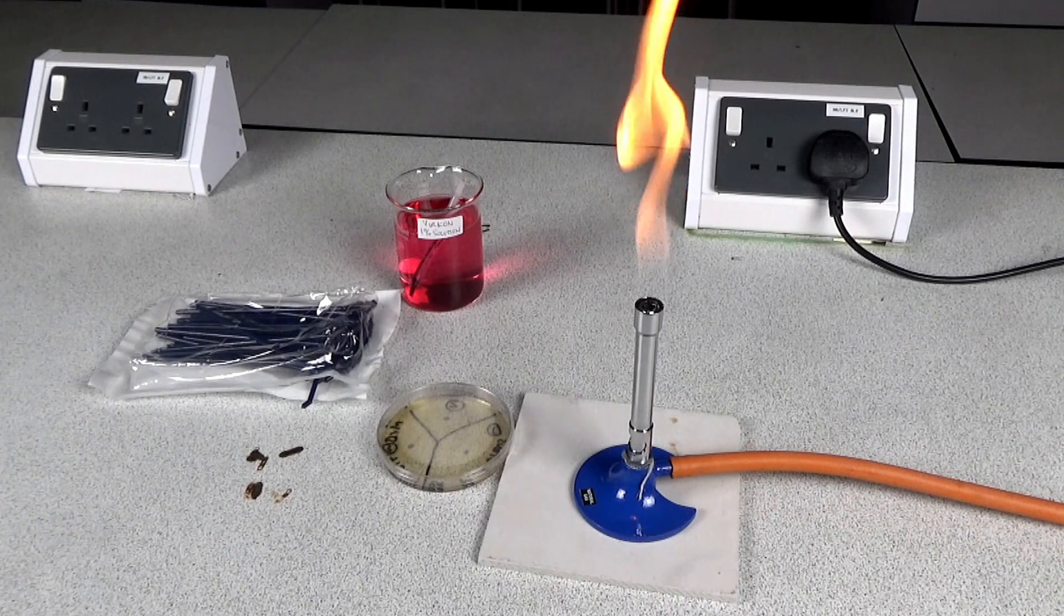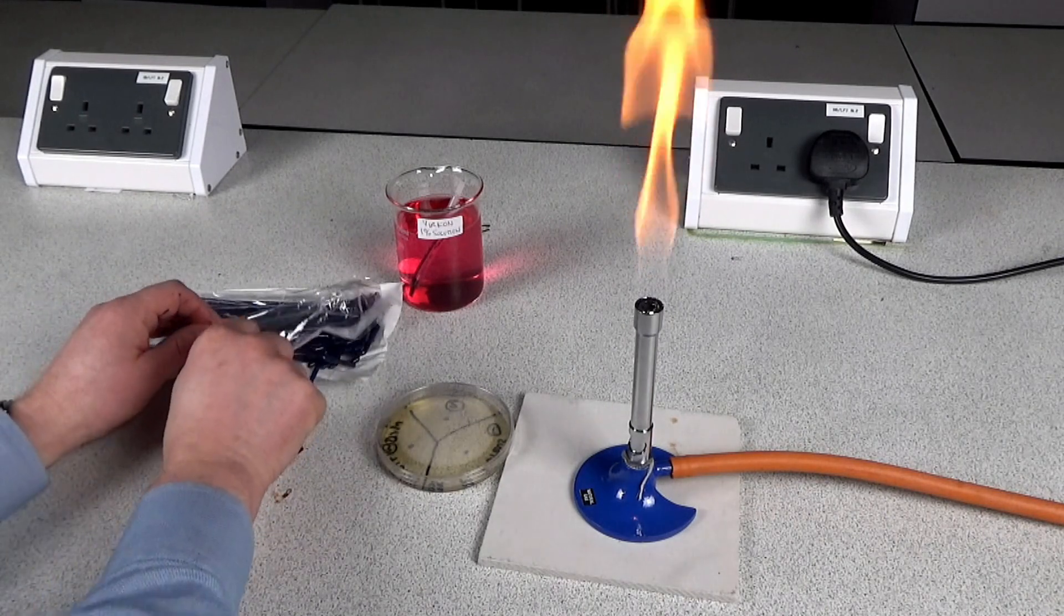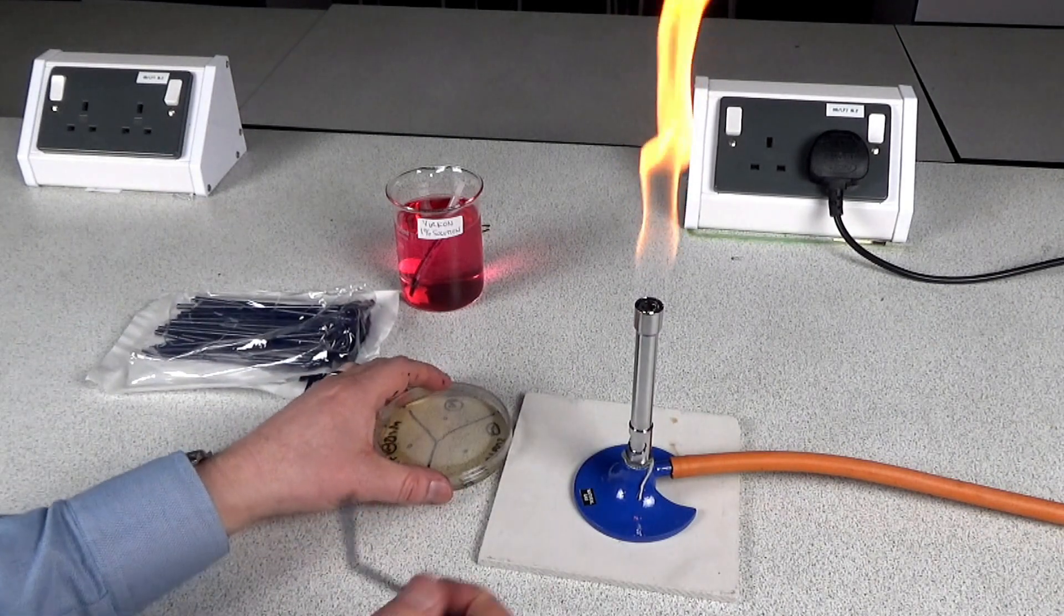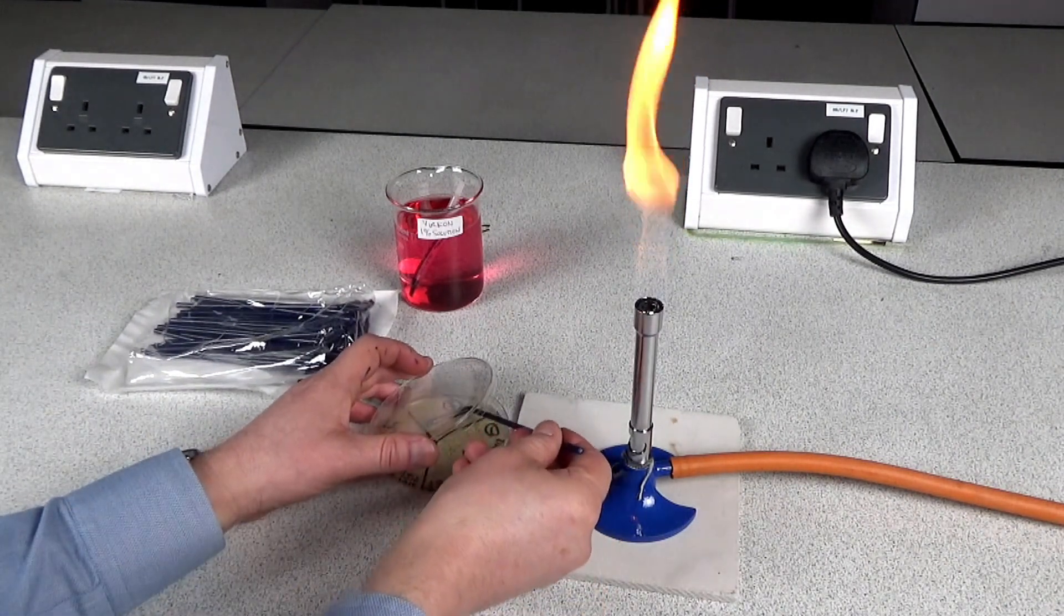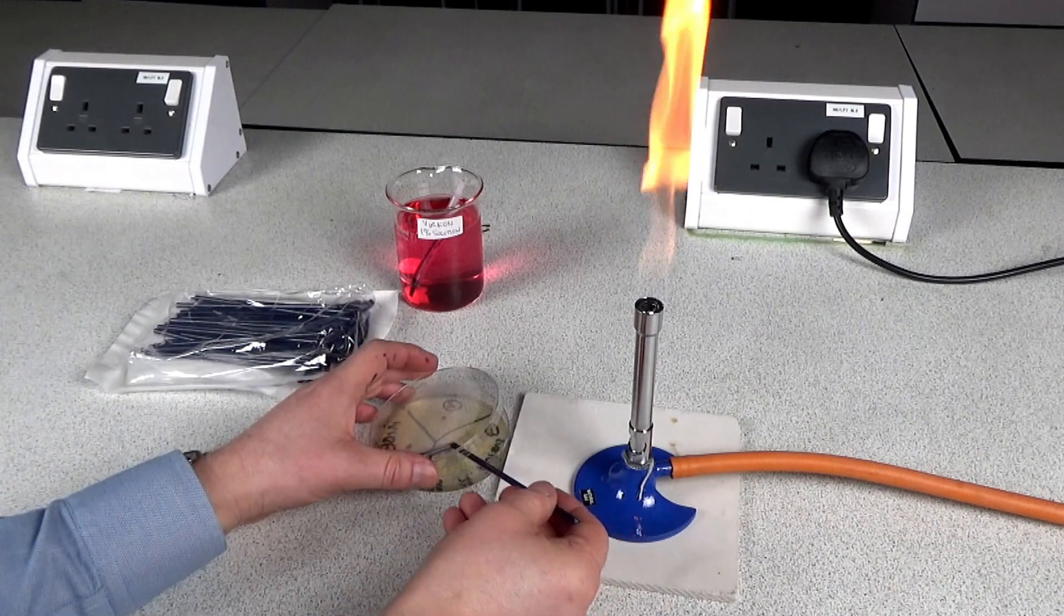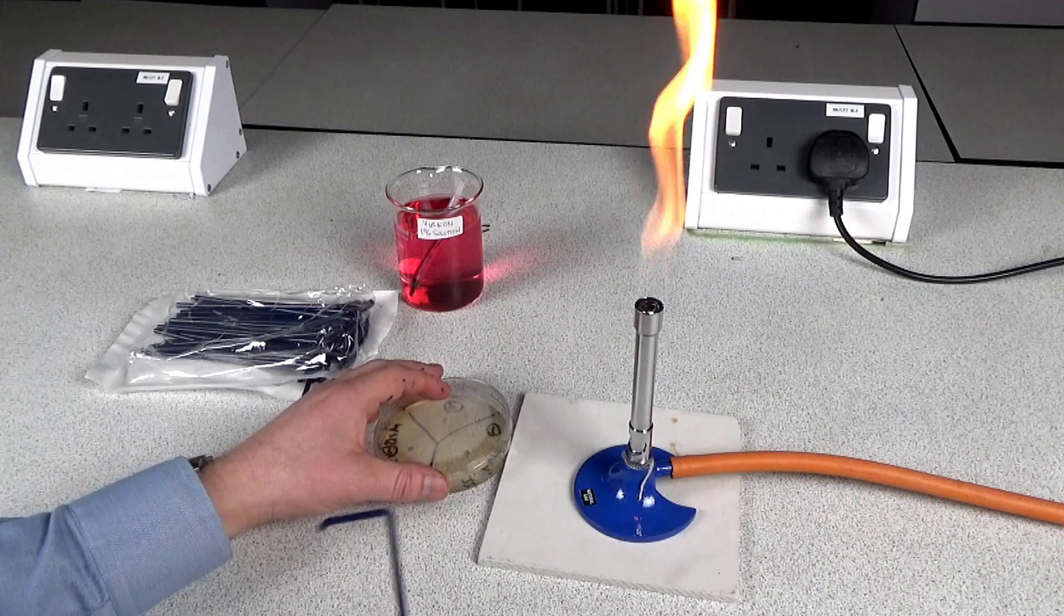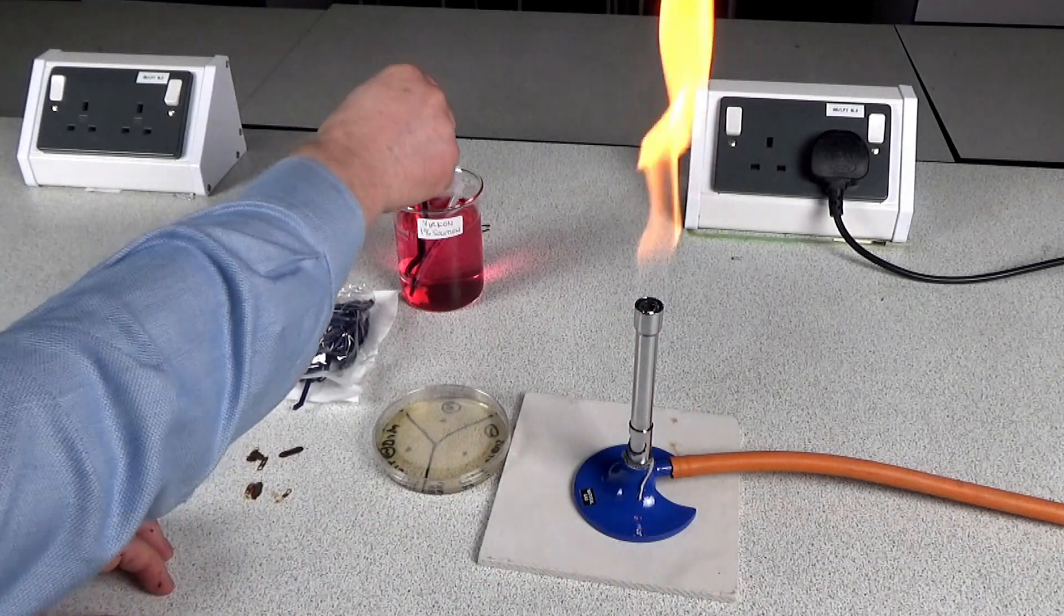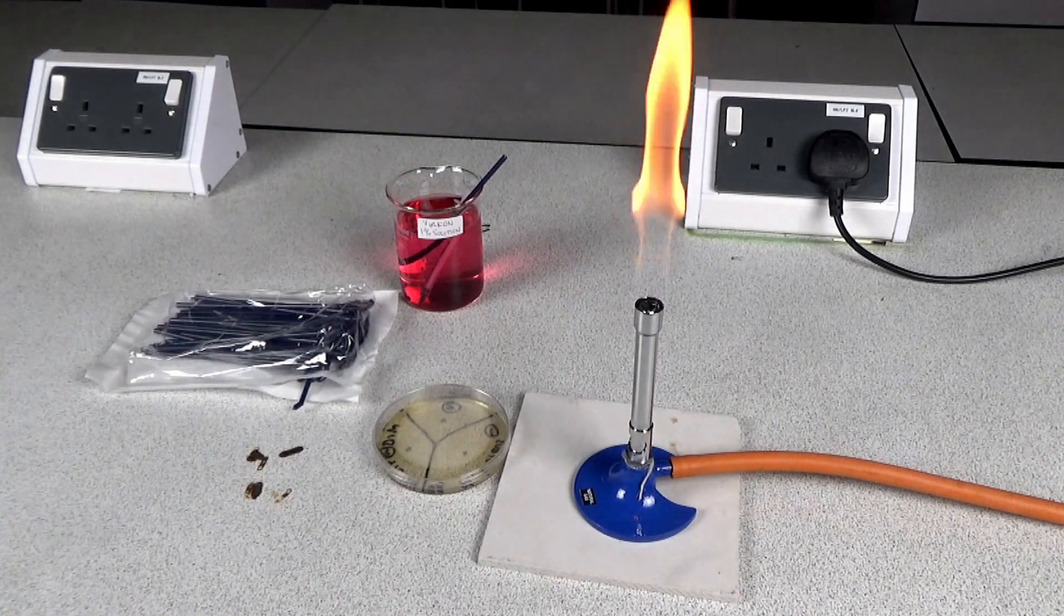Still working close to the Bunsen burner, your students then take one of the sterile L-shaped spreaders and they lift the lid of the petri dish slightly and they spread the bacterial culture that you've just placed onto the nutrient agar. The L-shaped spreader then goes into the pot of the vircon along with the syringe that's been used.